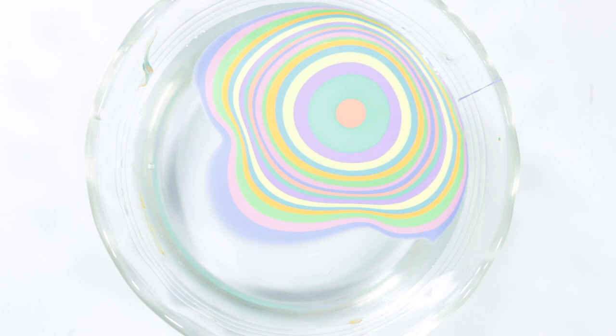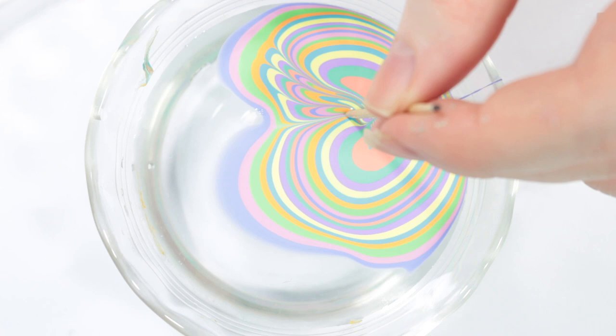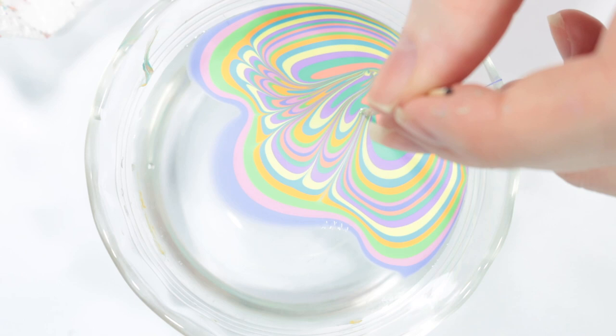Then take a toothpick and start dragging from maybe the third or fourth ring. Don't go from the first one because that one's already probably dry. And start dragging the polish in towards the center or really in any direction you like to create a marble.